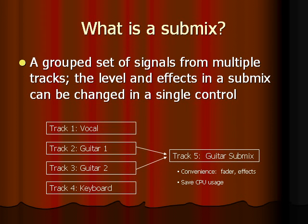What is a Submix? A Submix is a grouped set of signals from multiple tracks. It allows you to control the levels and effects of multiple tracks within a single Submix track. In this example, I have a project file that has 4 tracks: vocal, guitar 1, guitar 2, and keyboard. My purpose is to combine guitar 1 and guitar 2 so that I can apply one effect and have one set of controls for both guitars. So I'll create track 5 as a guitar Submix track. It is convenient — it allows one track control for both guitar tracks, and it also saves CPU usage because I'm only applying one effect onto both guitar tracks instead of having individual effects on each.